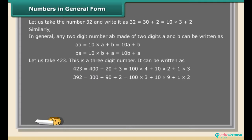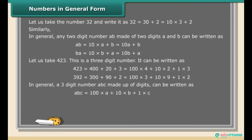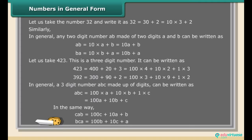In general, a three-digit number ABC made up of digits can be written as: ABC = 100A + 10B + C. In the same way, CAB = 100C + 10A + B, and BCA = 100B + 10C + A.